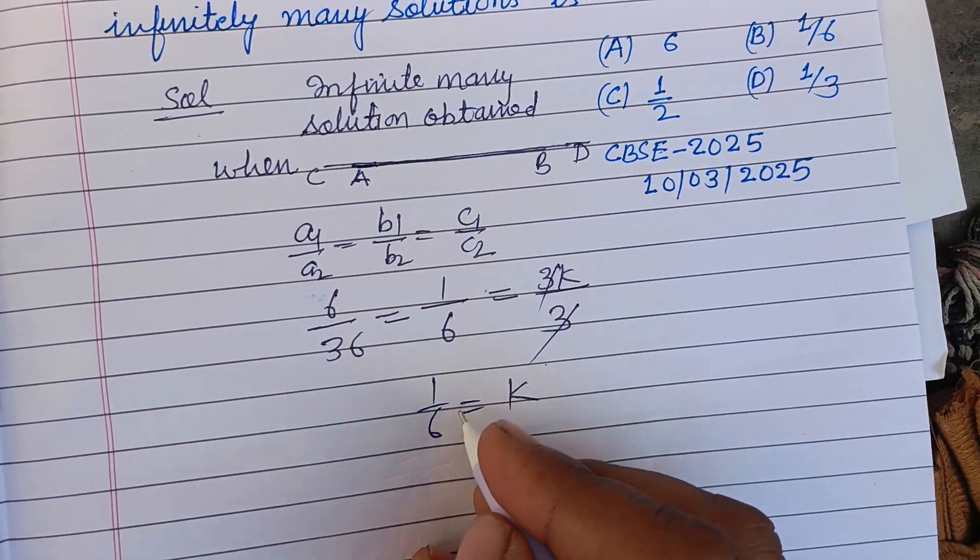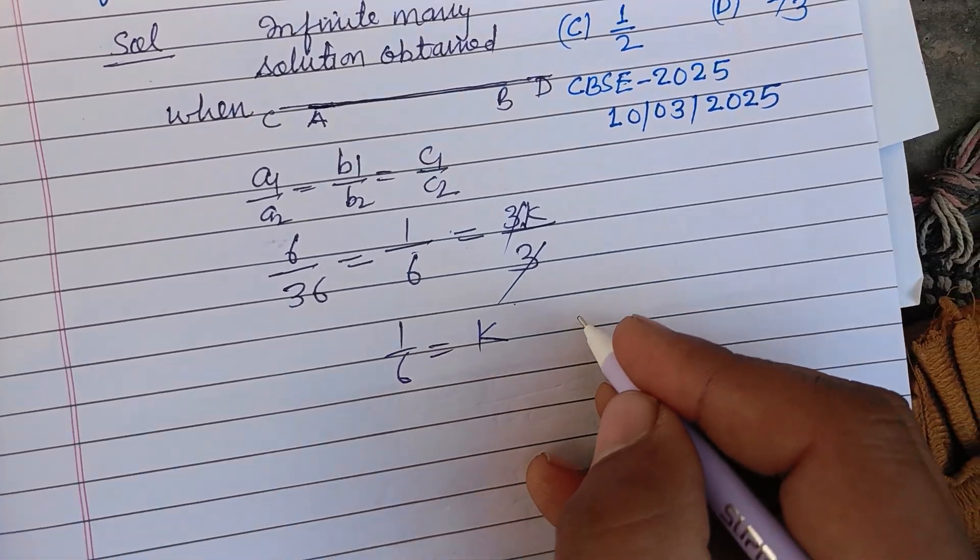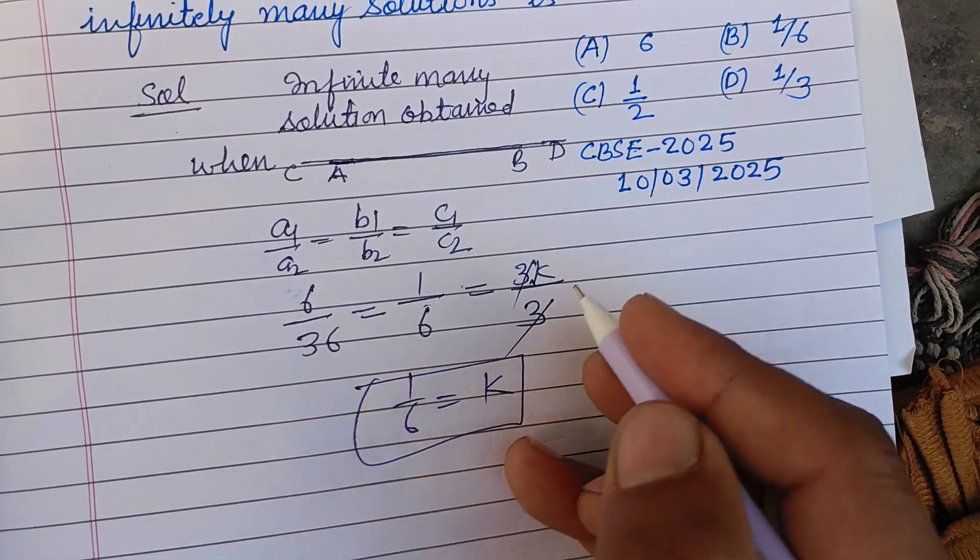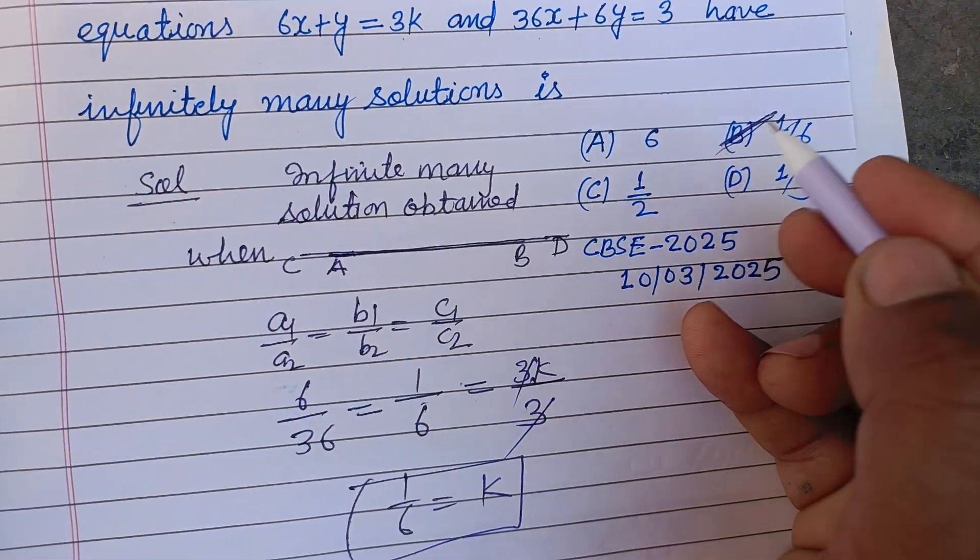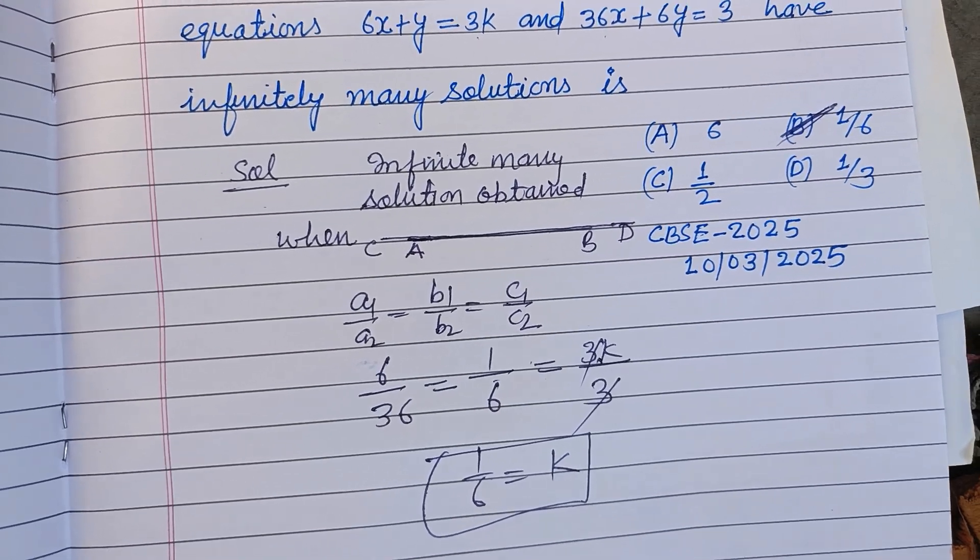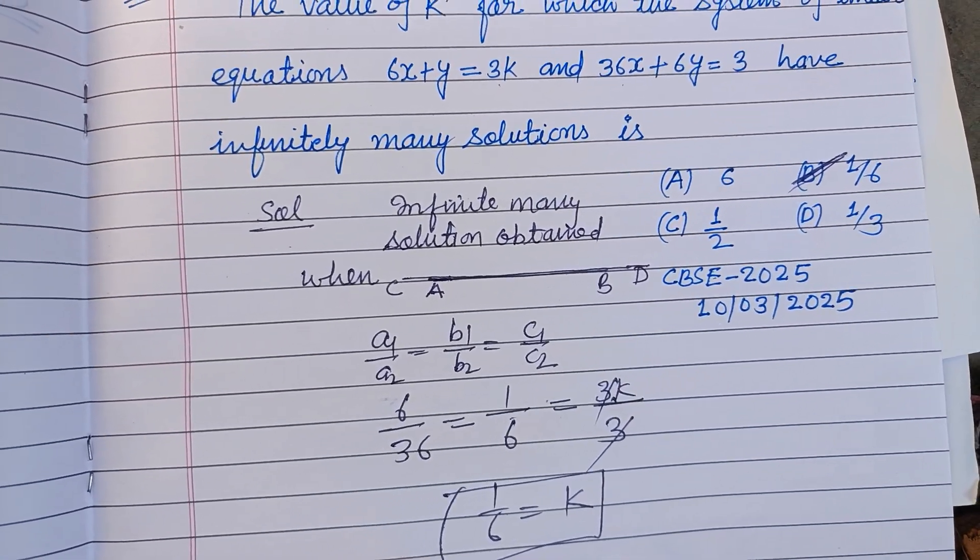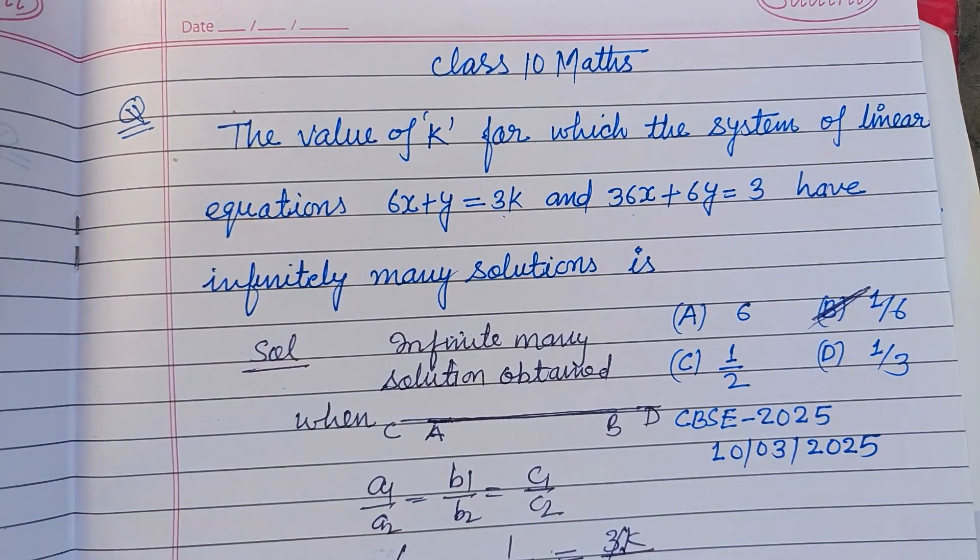1/6 = k from here. So the value of k is 1/6, so B is the correct answer. Very simple question, formula-based. I hope you got it. Please like the video, subscribe to the channel. Thanks!